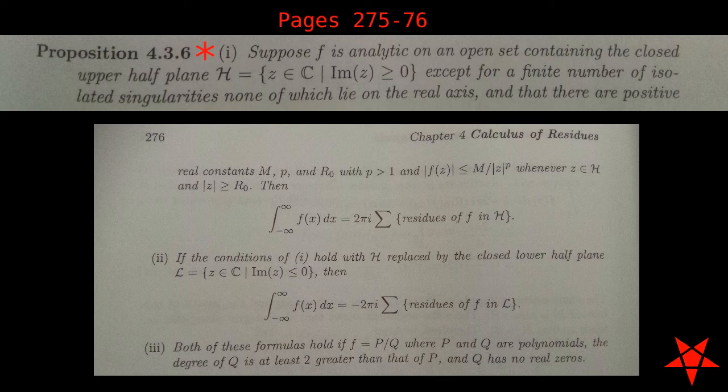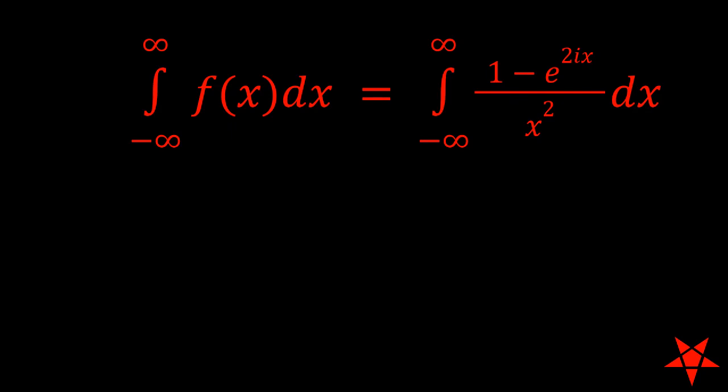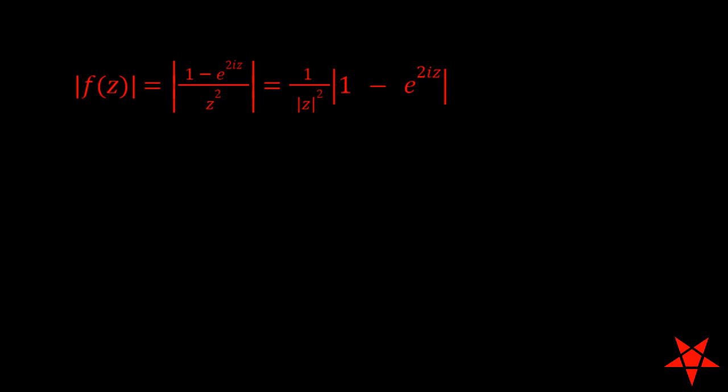You do not necessarily need to look for values of m, p, and r0 that satisfy the entire open set of z values described in Part 1 of Proposition 436. So don't be like me. Don't spend three days chasing something that doesn't exist while second guessing yourself. For f of x equals 1 minus e to the 2yx over x squared, we need to take a moment to substitute z in for x and evaluate the absolute value of f of z.